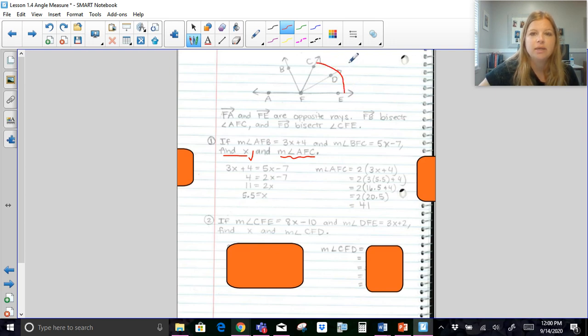CFE. So this entire angle here is 8X minus 10. And I think it's always a good idea to really like draw things out when you're working on problems. And then it says DFE is 3X plus 2. Find X and the measure of CFD. Well, now let's remember that this angle here was congruent to this angle here because they were bisected. So there's a couple ways I can look at this.